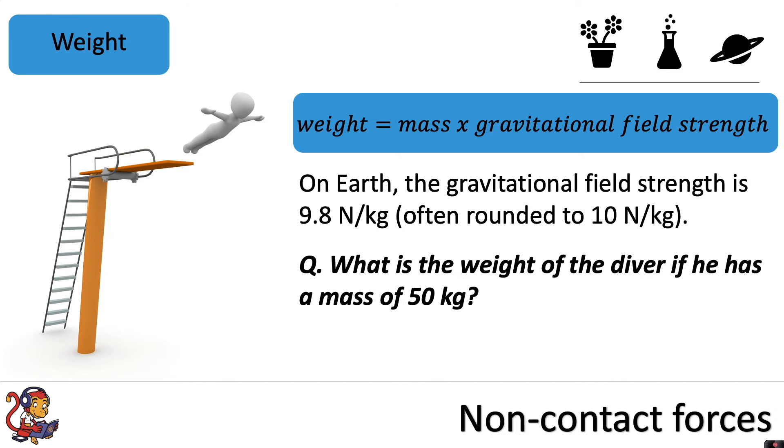we would use our equation weight equals mass times gravitational field strength. So weight equals your mass, which is 50 kilograms in this question, multiplied by gravitational field strength. And because he's on Earth, that would be 9.8 newtons per kilogram. So he would have a weight of 490 newtons.